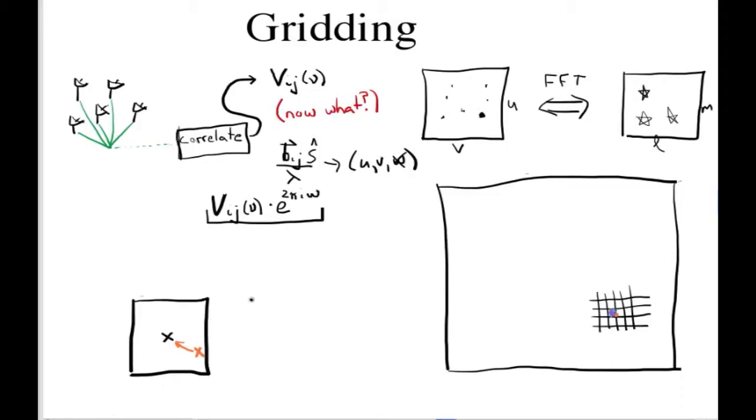This process of having realigned our visibility measurement at a different coordinate can be described mathematically as taking the visibility that we measured, convolving it with some gridding kernel G, which I'll write in a green color here.